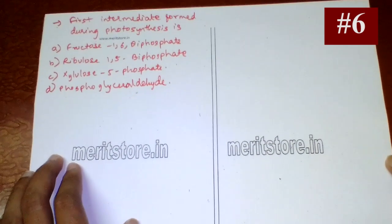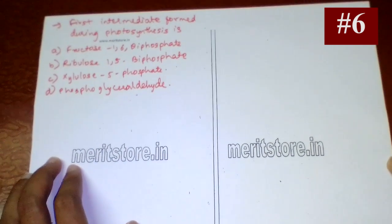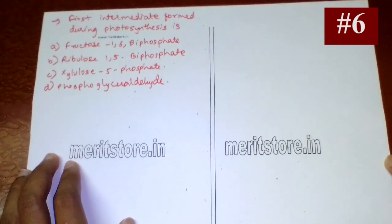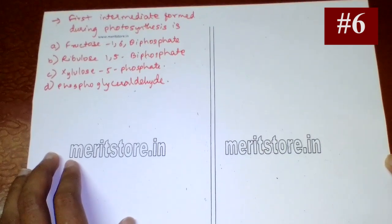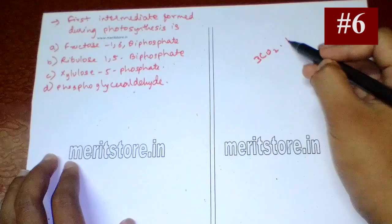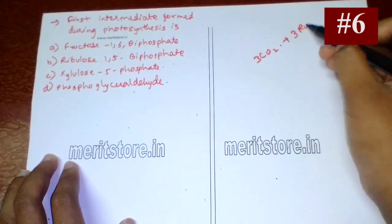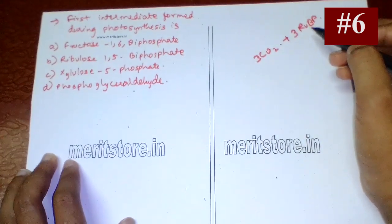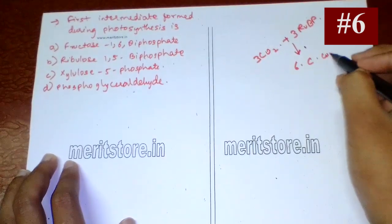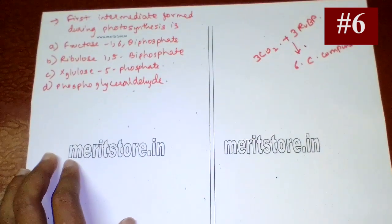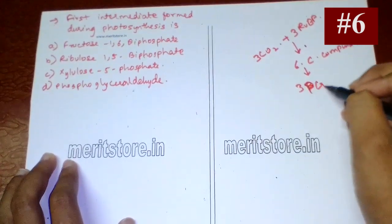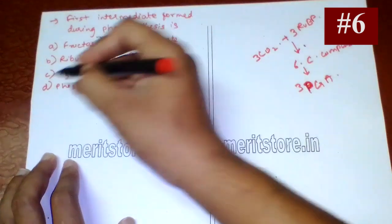The first intermediate formed during photosynthesis is phosphoglycerate (PGA). When three molecules of carbon dioxide combine with three molecules of ribulose bisphosphate (RuBP), they produce three molecules of an unstable six-carbon compound, which immediately breaks down into molecules of 3-PGA (phosphoglycerate). So option D is the correct answer.